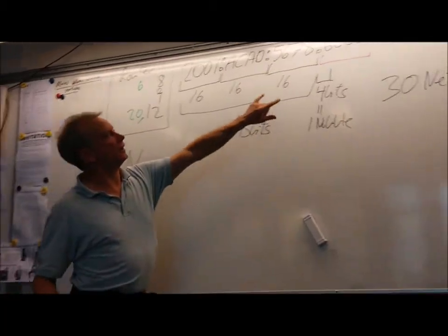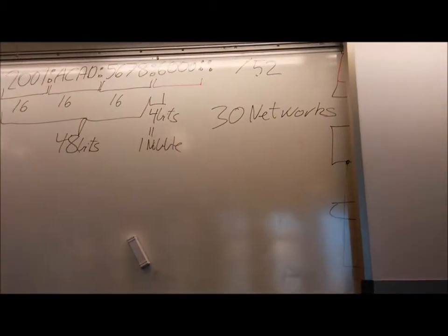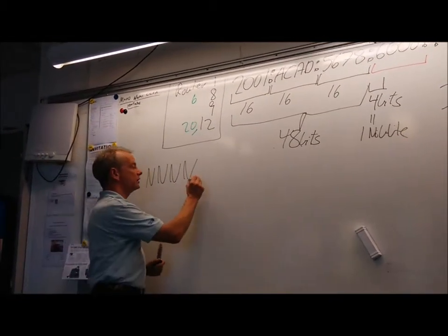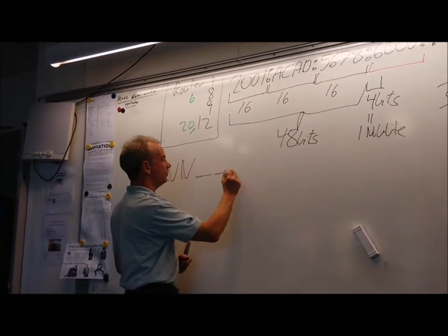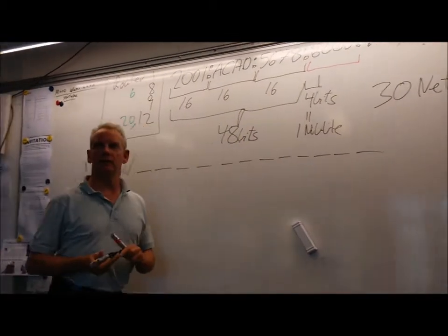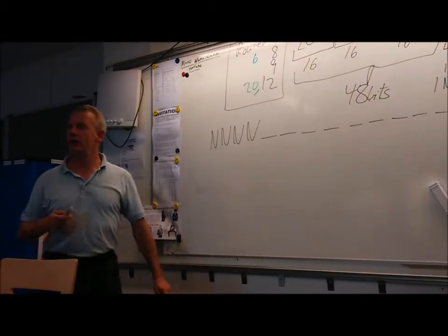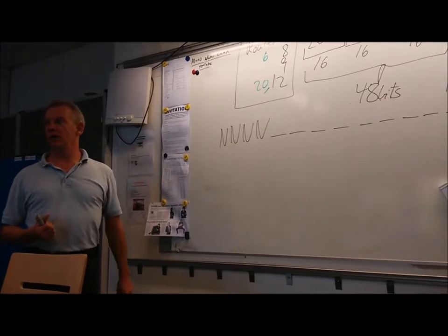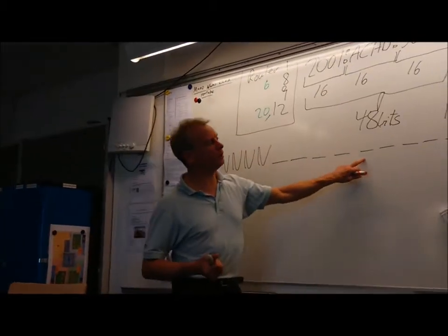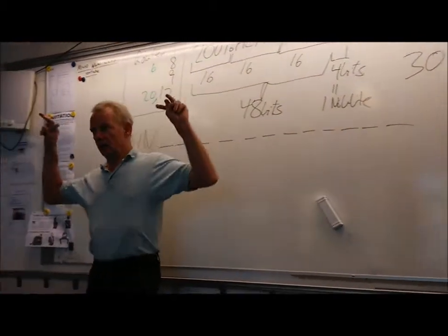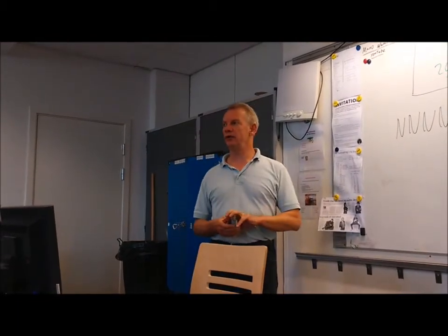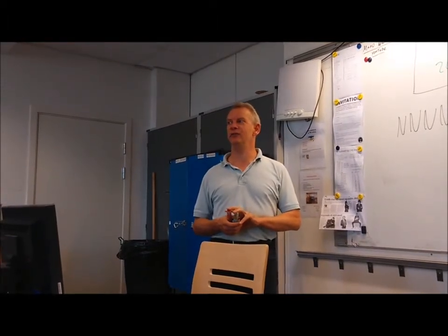I can take the last 3 nibbles — that is 12 bits — and say they can be subnet bits or host bits: 1, 2, 3, 4, 5, 6, 7, 8, 9, 10, 11, 12. How many of those should I use as subnet bits to make 30 networks? How many should I mark as subnet bits and how many will be host bits? 4 subnet bits? 5 subnet bits? I need 5 bits.